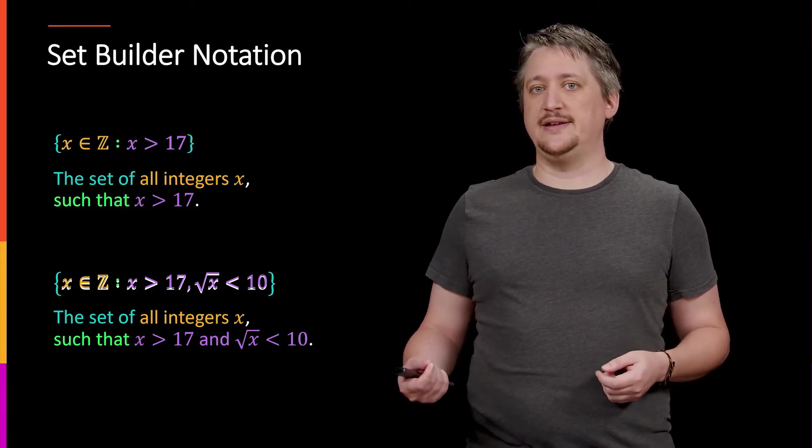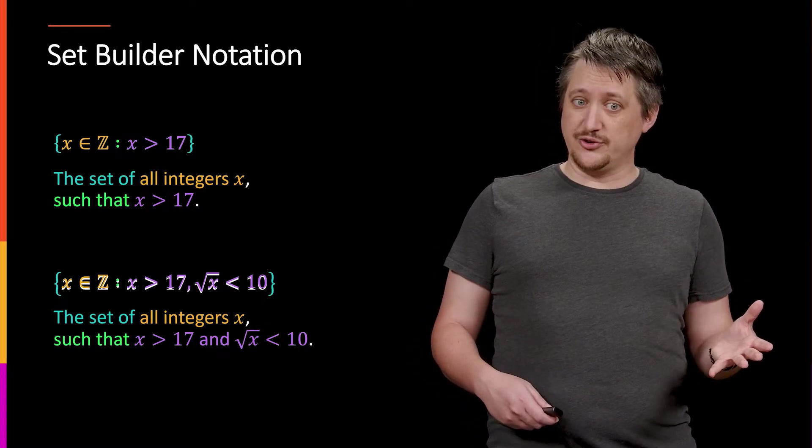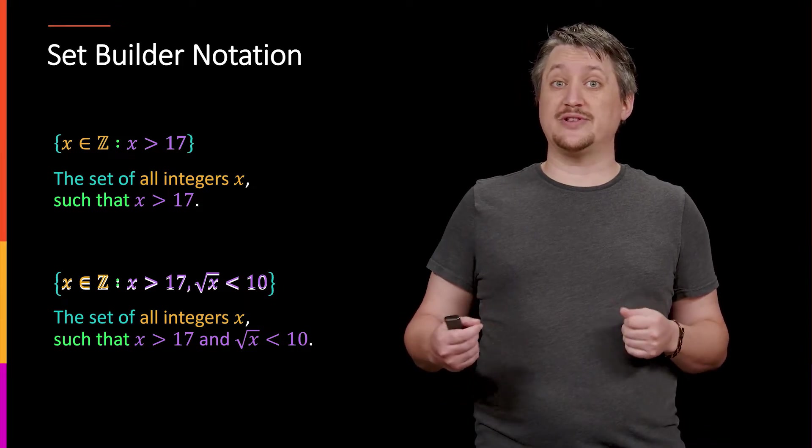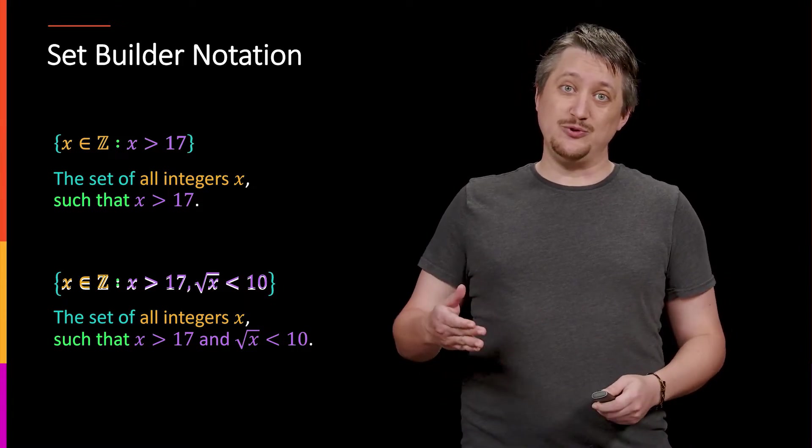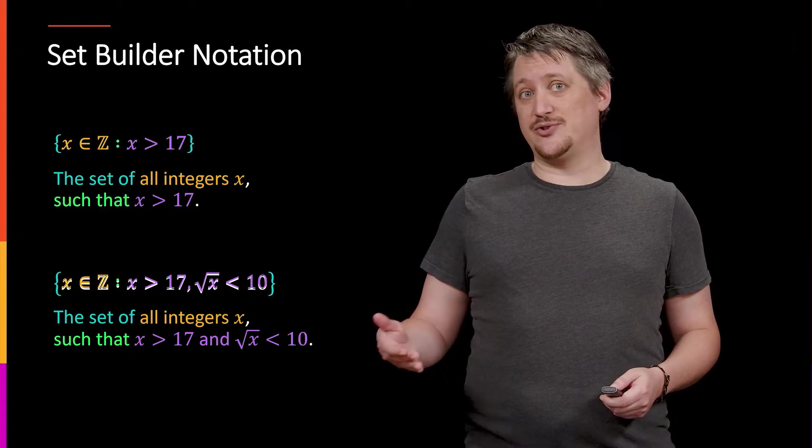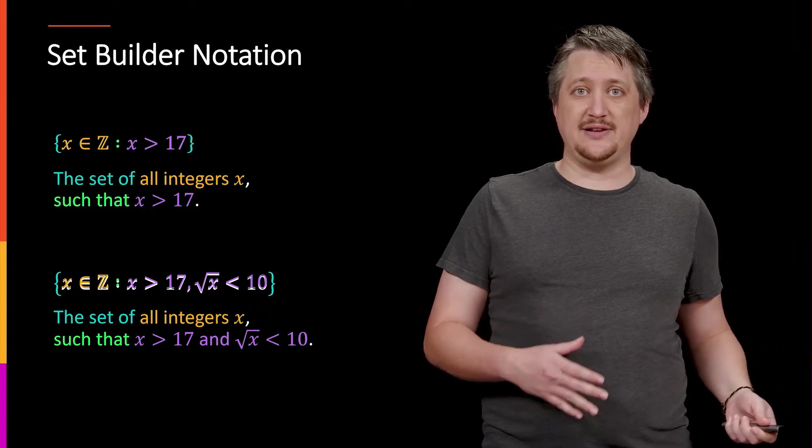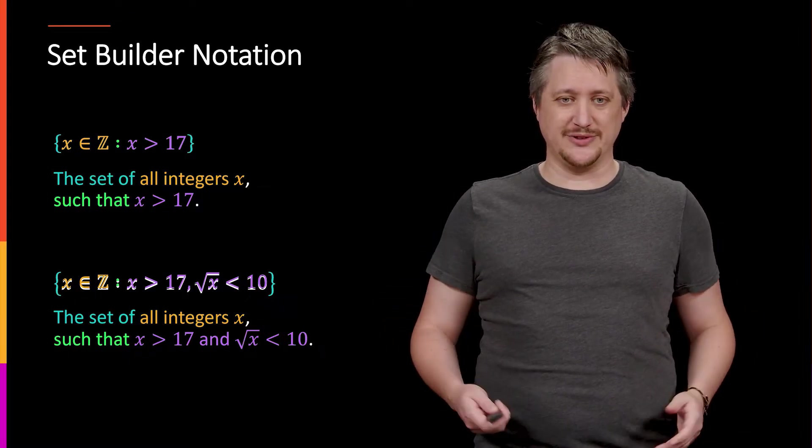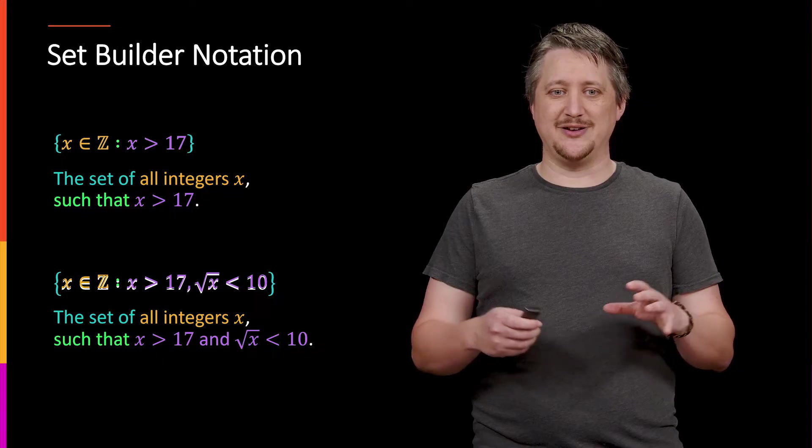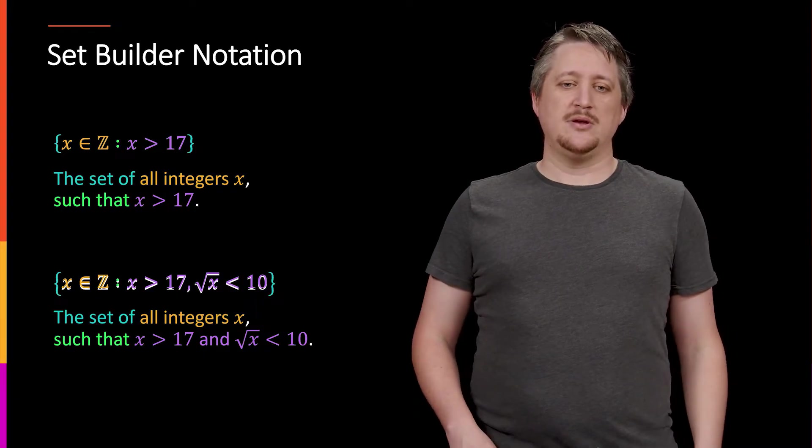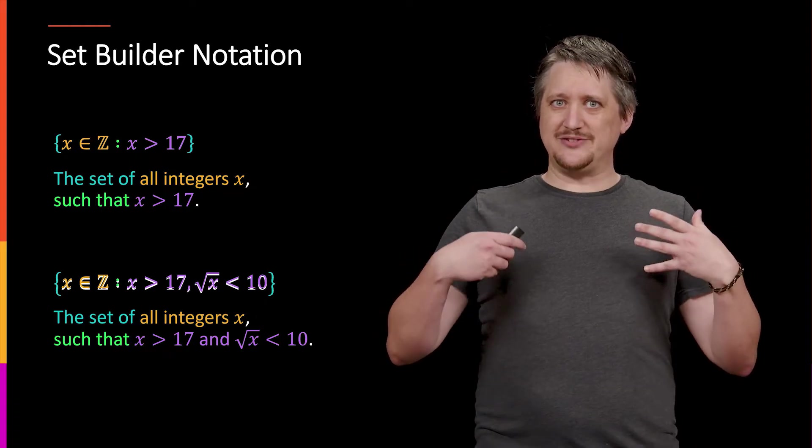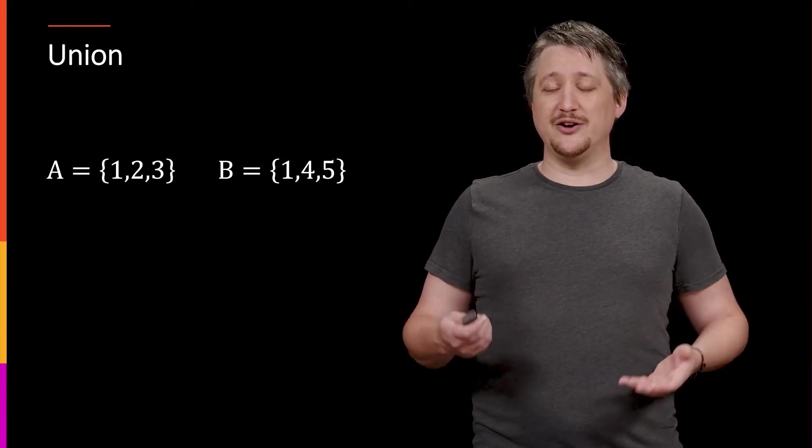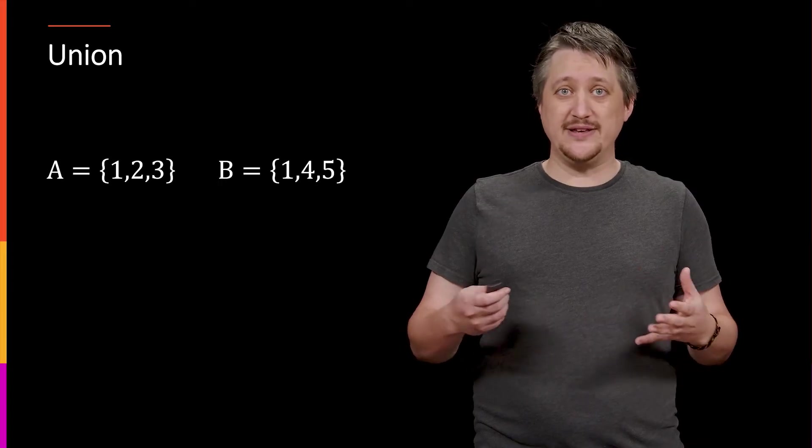So x has to be larger than 17, and the square root of x has to be less than 10. So this would be equal to only integers strictly bigger than 17, so 18, 19, 20 and so on, up to the point where the square root is strictly less than 10, which means that we're going up to 99, not 100, because the square root of 100 is 10, not strictly less than 10. So we're looking at all the integers between 18 and 99. But we can capture that instead of trying to list all of those numbers, which would be a very long list. We can capture that in this nice set building notation.